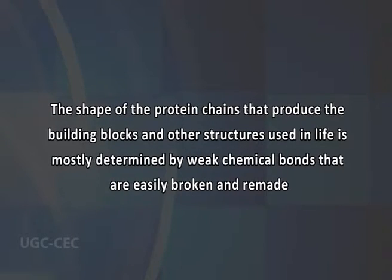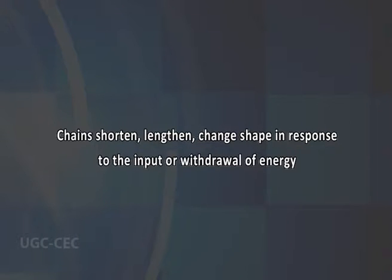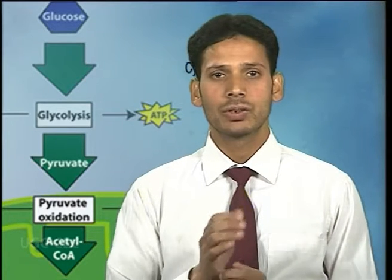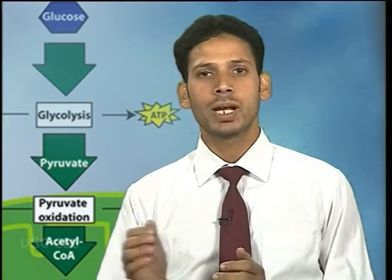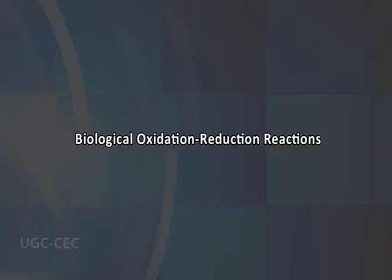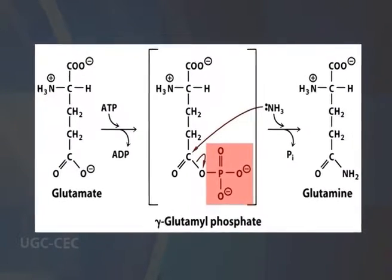The shape of protein chains that produce the building blocks and other structures used in life is mostly determined by weak chemical bonds that are easily broken and remade. These chains can shorten, lengthen, and change shape in response to input or withdrawal of energy. The changes in the chains alter the shape of the protein and can alter its function, or cause it to become either active or inactive. The transfer of phosphoryl groups is a central feature of metabolism.